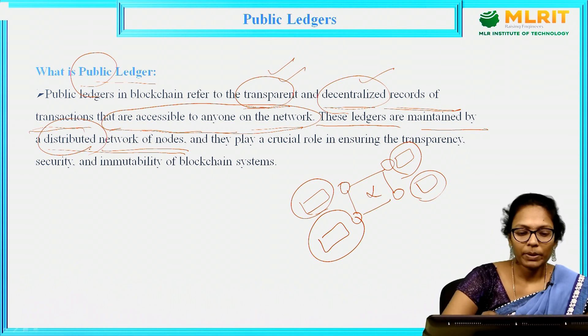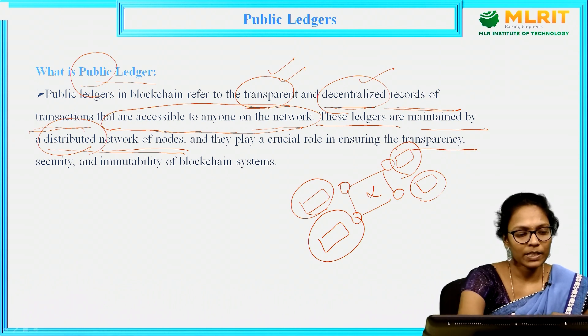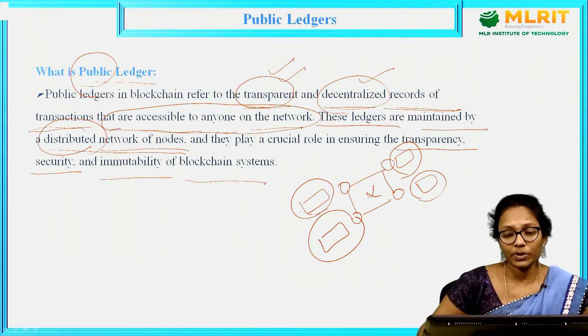The main aim of the public ledger is transparency, security, and immutability of blockchain systems.